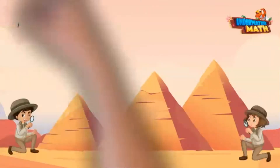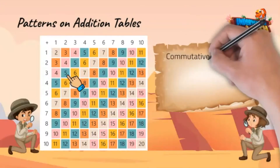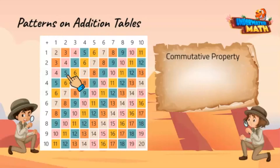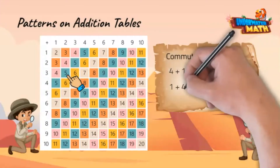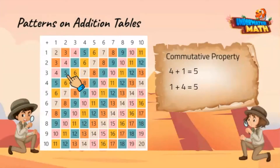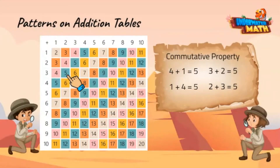Let's now explore patterns on an addition table. Addition tables help us add to find a sum. Why do the teal boxes here all contain fives? That's the commutative property. The diagonal line shows different ways of writing five as the sum of two different numbers. For example, four plus one and one plus four, three plus two and two plus three — they all equal five. You can see this pattern for all numbers on the addition table.